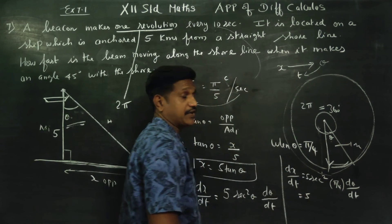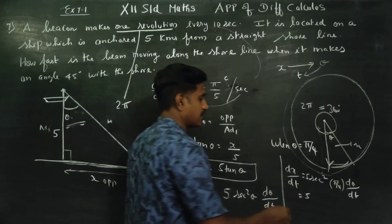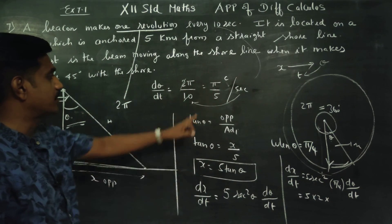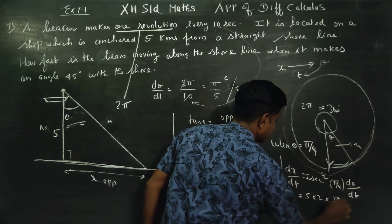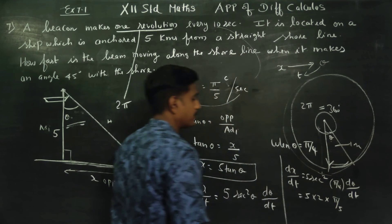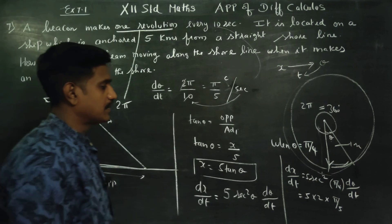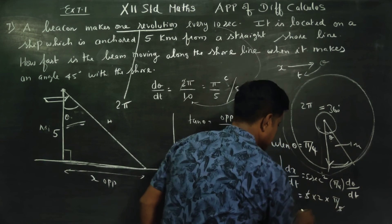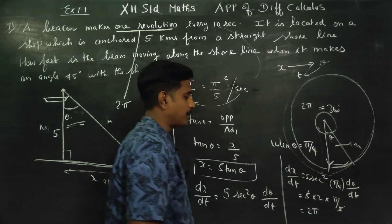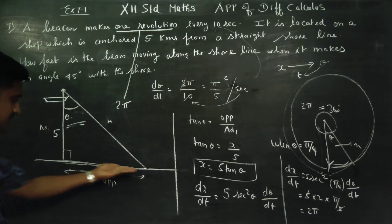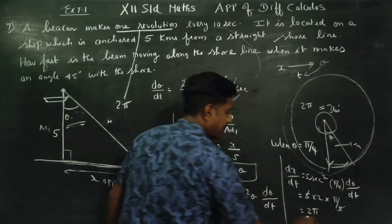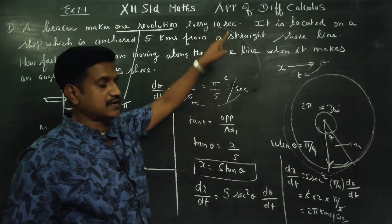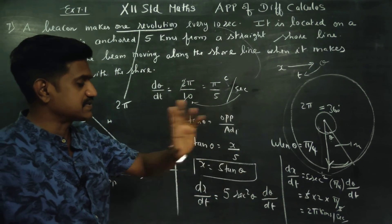Since sec(45°) = √2, we have sec²(45°) = 2. And dθ/dt = π/5. So dx/dt = 5 × 2 × π/5 = 2π kilometers per second. The answer is 2π kilometers per second.